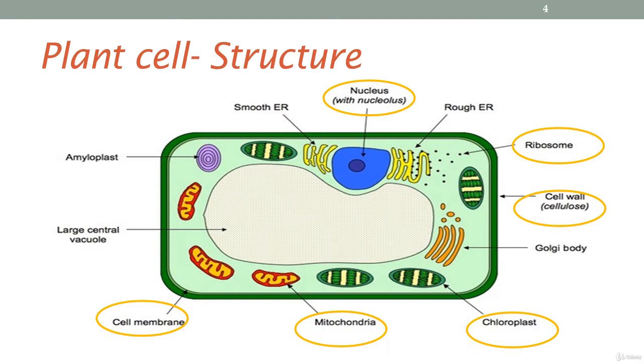On this slide, we have a diagram of a typical plant cell. The main structures that you should be able to identify are the nucleus, the ribosomes, the cellular cell wall, chloroplasts, the mitochondria, the cell membrane, and the large vacuole.